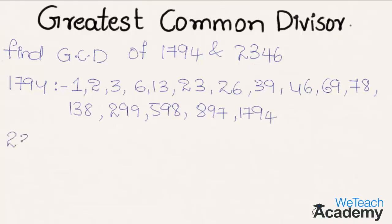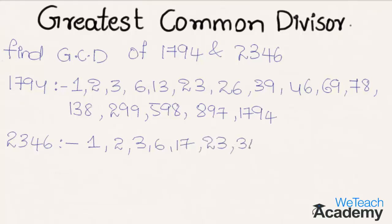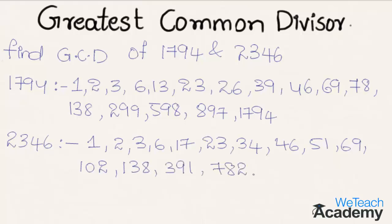Now let us consider the factors for the other number, 2346. It is divisible by 1, 2, 3, 6, 17, 23, 34, 46, 51, 69, 102, 138, 391, 782, 1173, and 2346 itself.